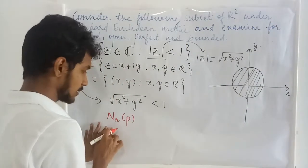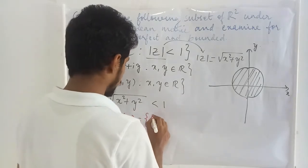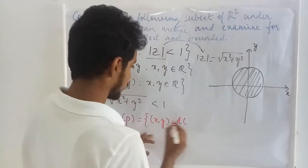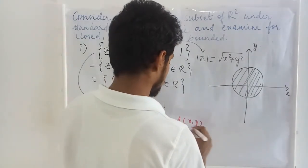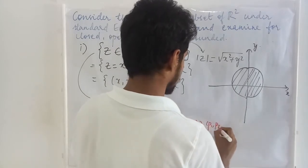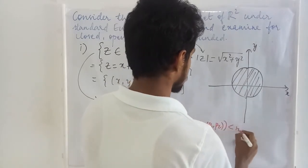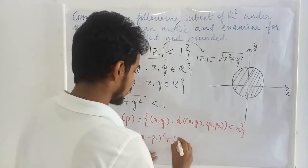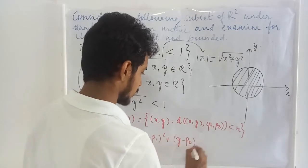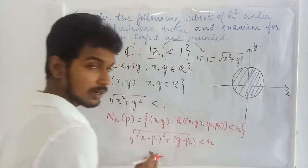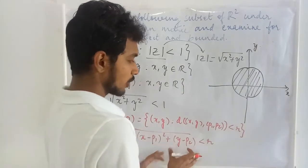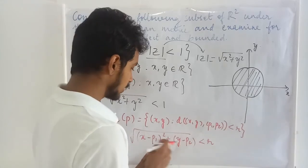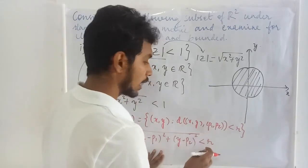Let me take a general point P with radius R. It is going to collect points of this form such that, with P taking the form (P₁, P₂), the distance has to be less than R. When we apply this in the metric, we will have a circle. When we plot it in a dynamic form, we can see this: it is the circle with center (P₁, P₂) and radius R.